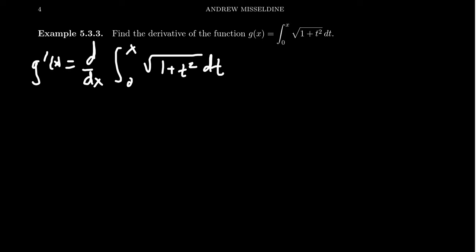By the fundamental theorem of calculus part 1, or what we might write down as FTC1, when you take the derivative of an integral function, this will just be the integrand, the square root of 1 plus x squared.